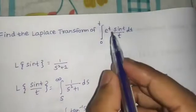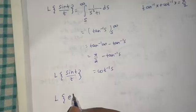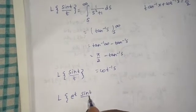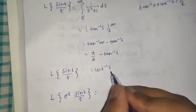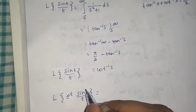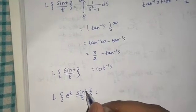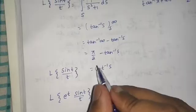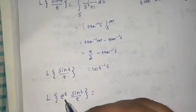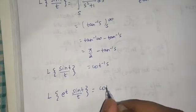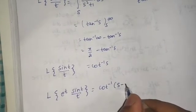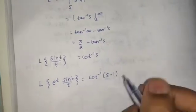Now there is a multiplication by e^t, so we'll use the first shift theorem. The Laplace of e^t · sin(t)/t — the first shift theorem says if you multiply by e^(at), replace s with s − a in the Laplace transform. We know Laplace of sin(t)/t is cot⁻¹(s). Multiplying by e^t means a = 1, so we replace s with s − 1, giving cot⁻¹(s − 1).